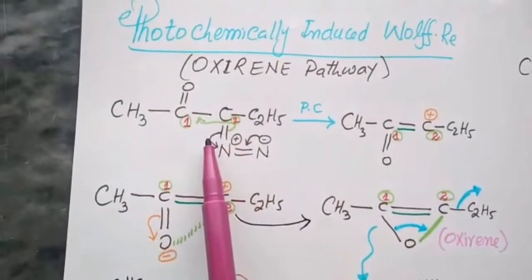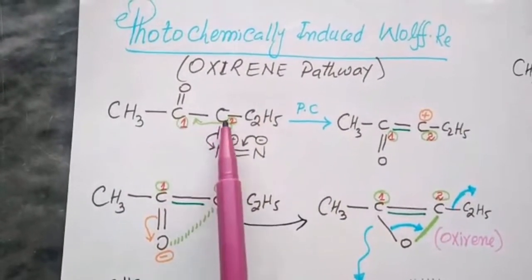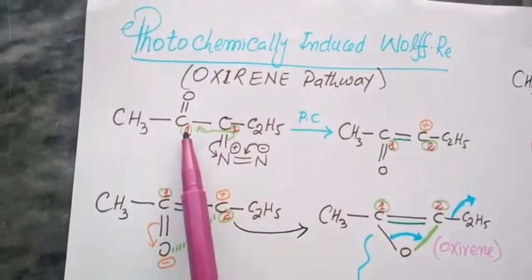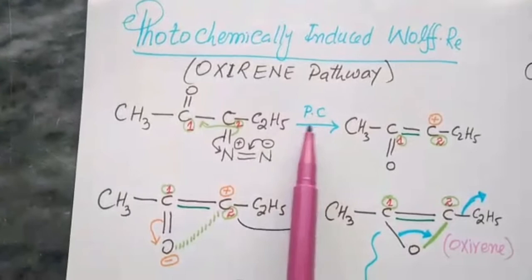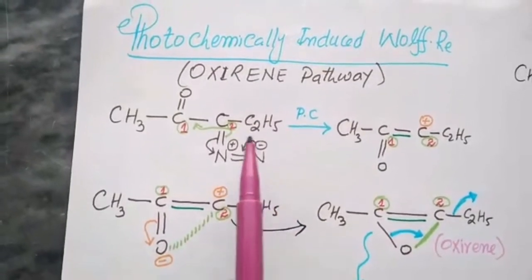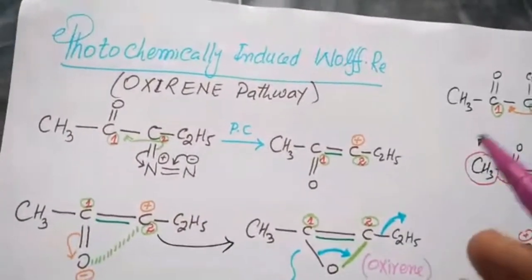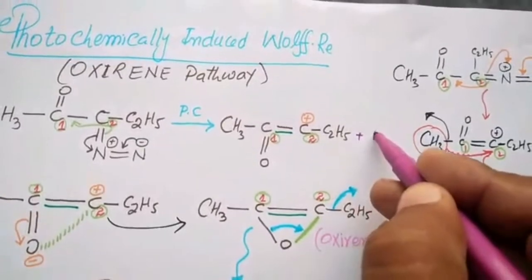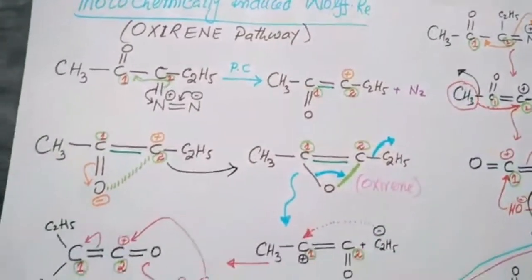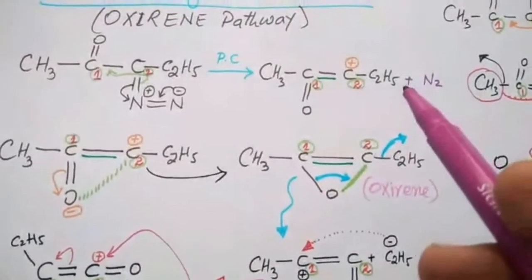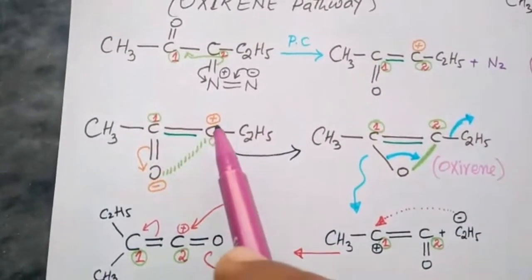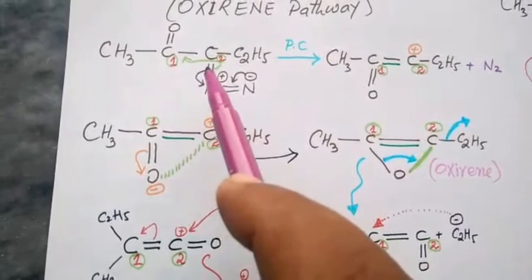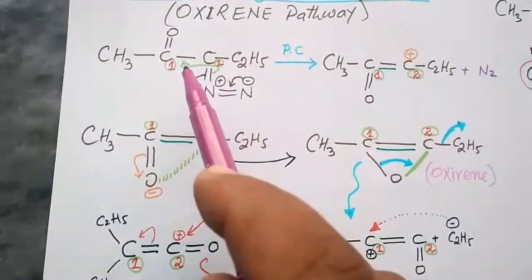Look here, this is the example. This is carbon one and this is carbon two. This is photochemically induced mechanism, so there is a release of nitrogen. When nitrogen is released, this one pi bond will shift.